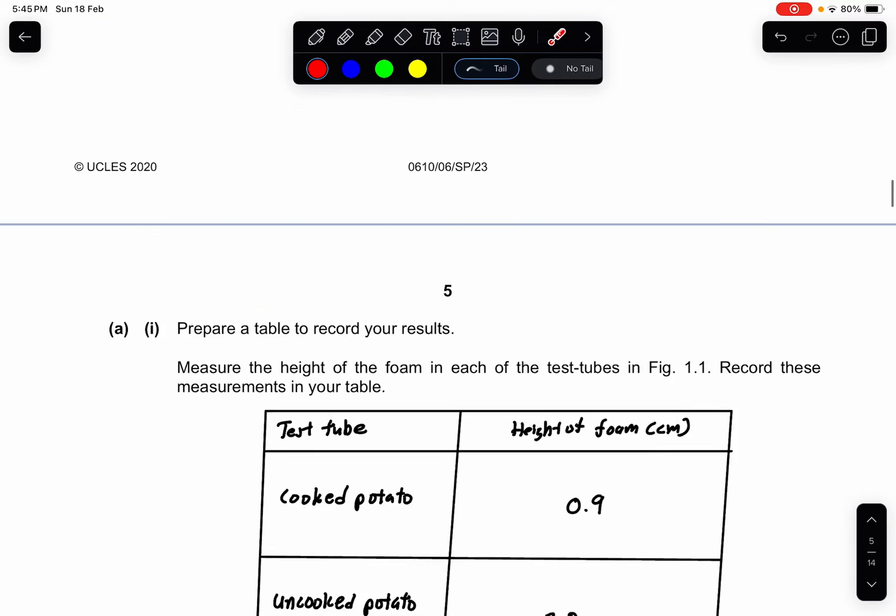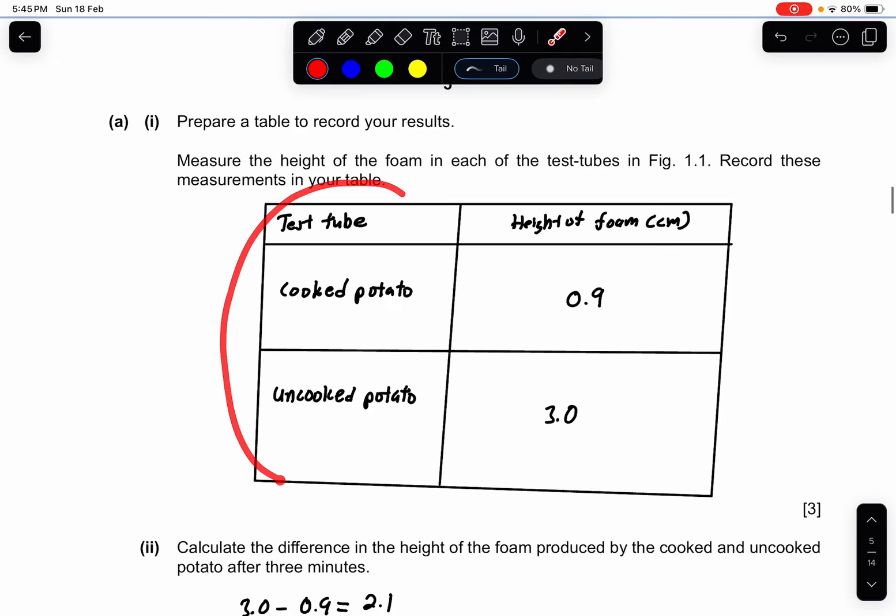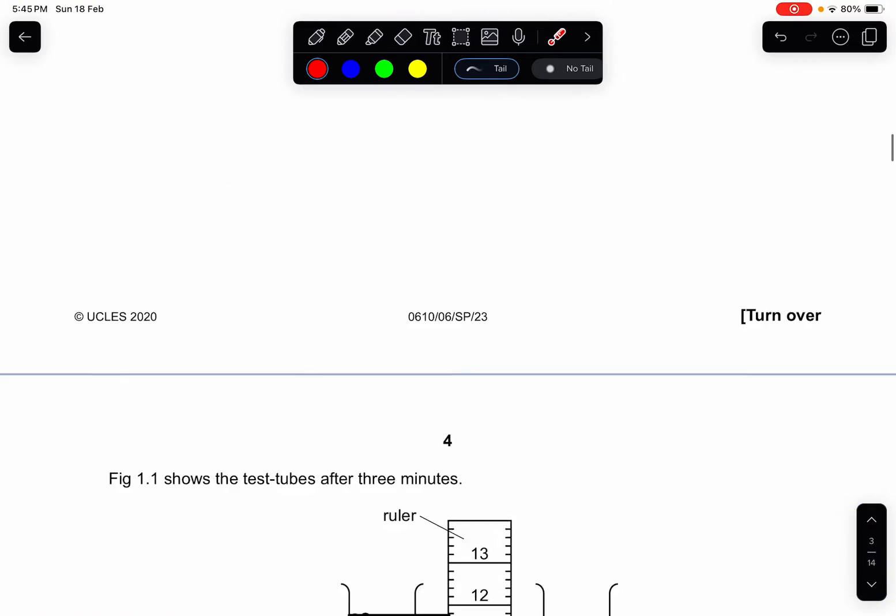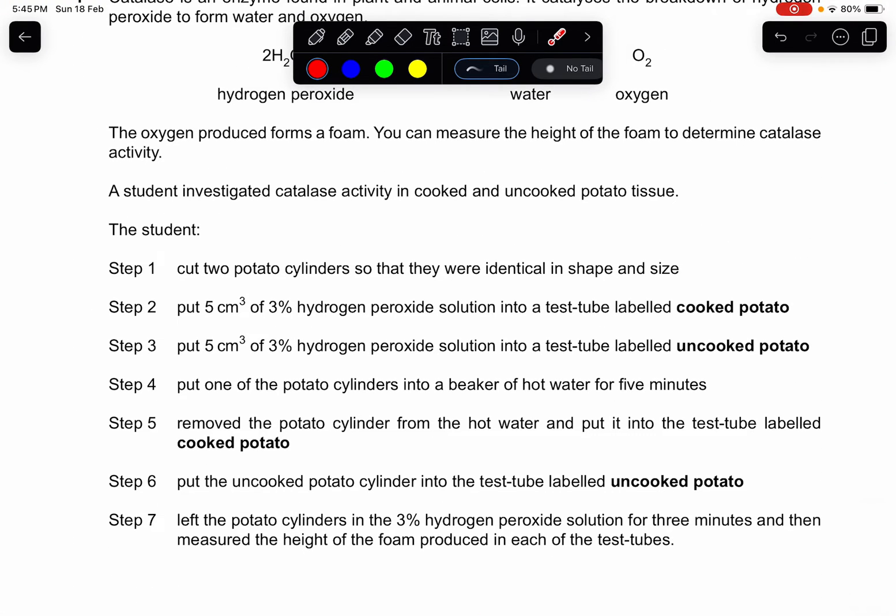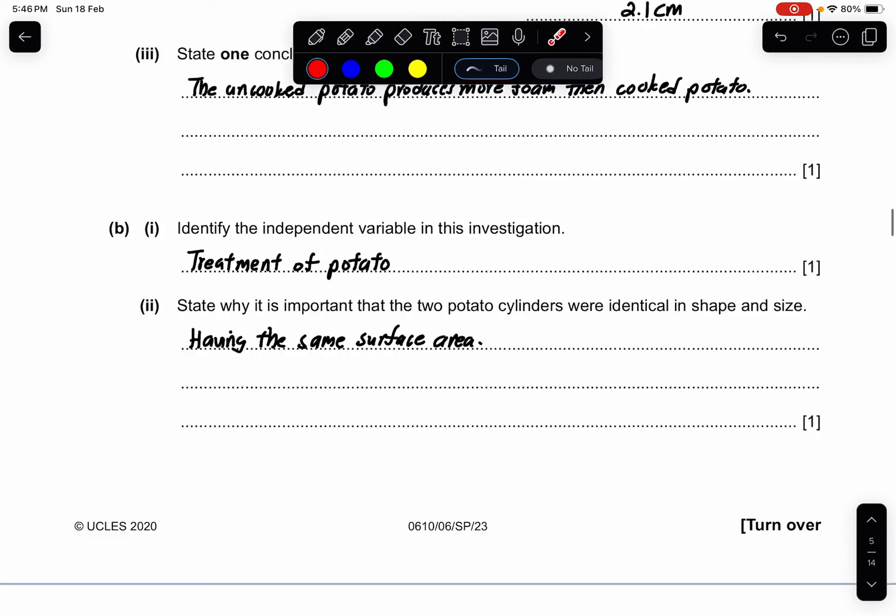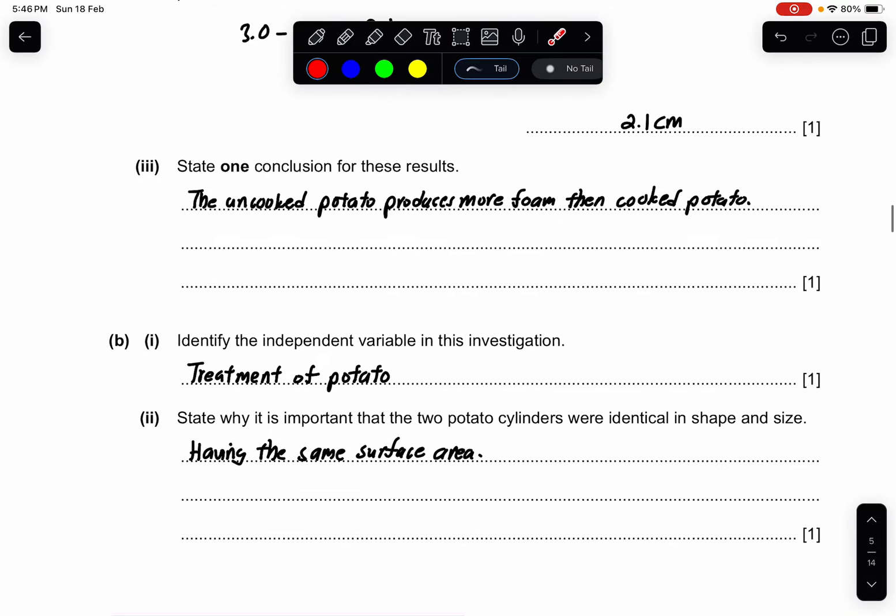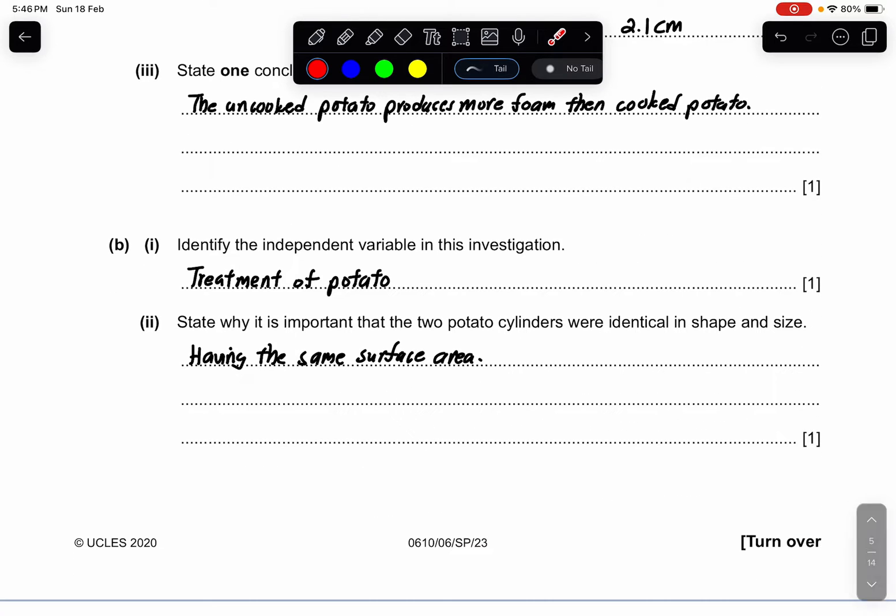B part 1: identify the independent variable in the investigation. So the independent variable lies in this column. They have one cooked potato and one uncooked potato. And if you look back, the actual difference is between the treatment of the potato because one is cooked and one is uncooked. So this is your answer, the treatment of the potato.